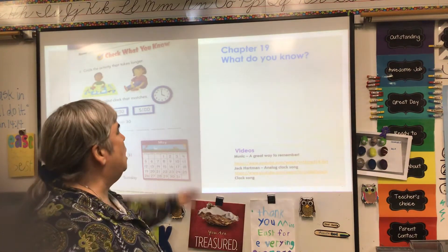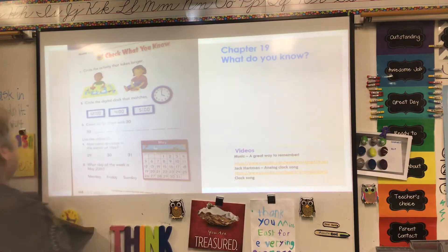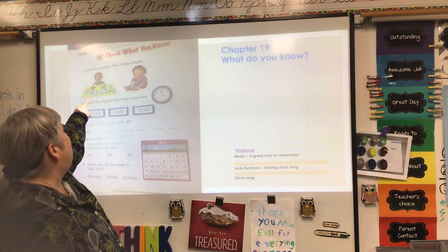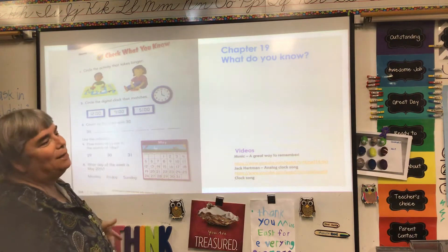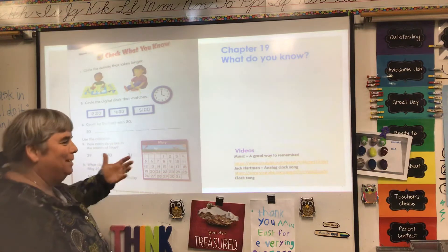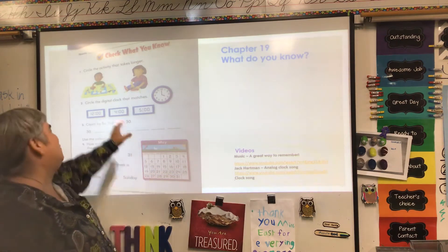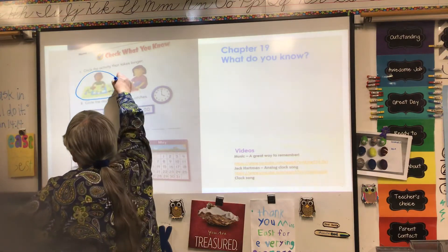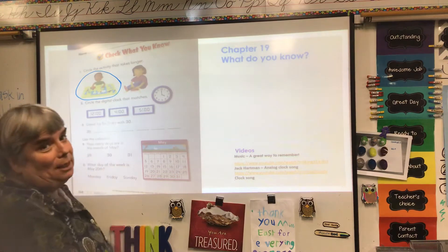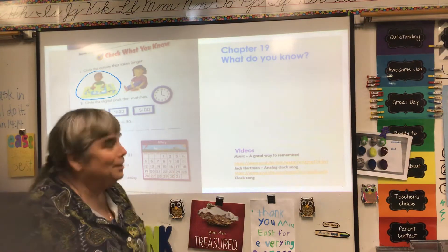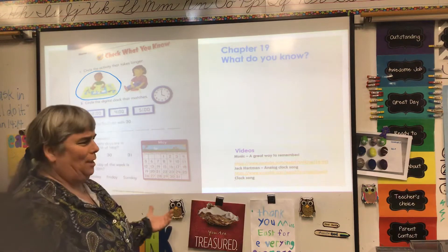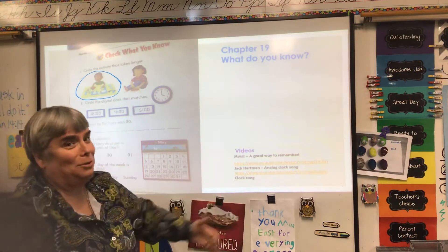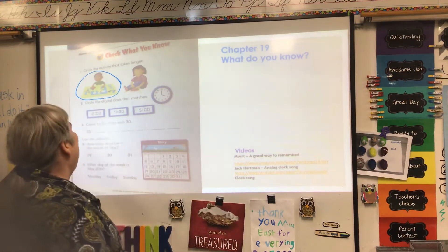So, the very first thing we're going to talk about is what do you already know? It says, circle the activity that takes longer: making a puzzle or tying your shoes. Now, technically, for some people tying their shoes — it's a toss-up, especially if it's a quick puzzle. But I think the one they want you to circle is the puzzle. Tying your shoes needs to take about 30 seconds, maybe a minute, and that doesn't include all the time your parents or teacher was nagging you to do it.